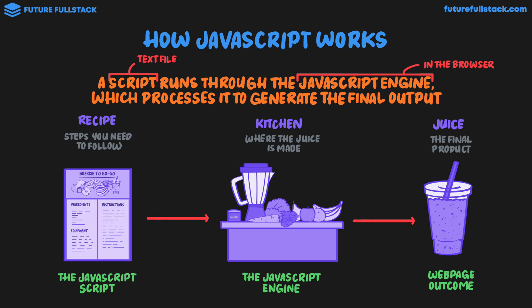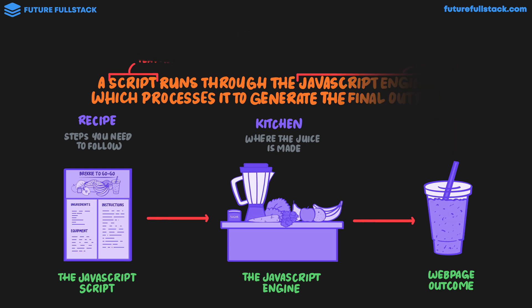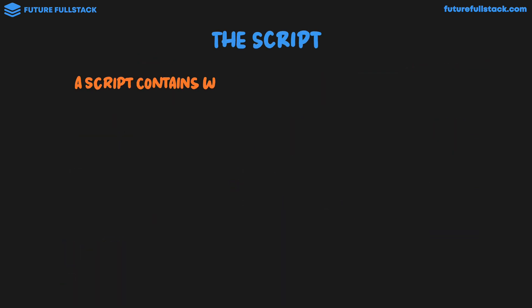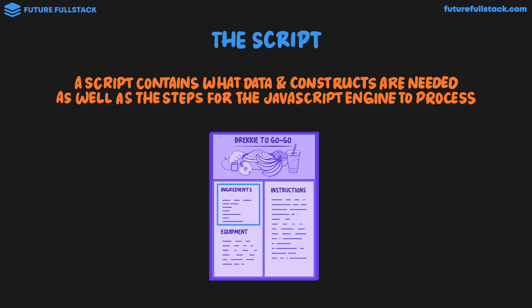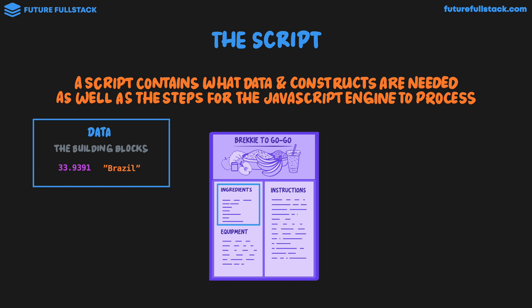Let's now take a look at the script and JavaScript engine in a bit more detail, starting with the script. A script contains what data and constructs are needed, as well as the steps for the JavaScript engine to process. Looking back at our recipe, first we have the ingredients — what we need to make the juice. In JavaScript, we call this the data. It's the building blocks — things like numbers and text, which we call strings. In our recipe, the building blocks are things like a banana or oat milk.